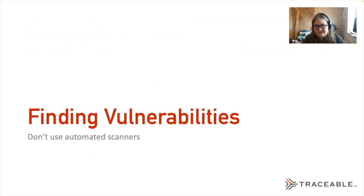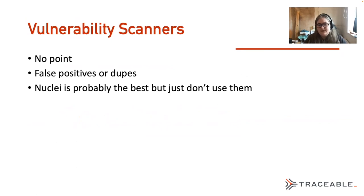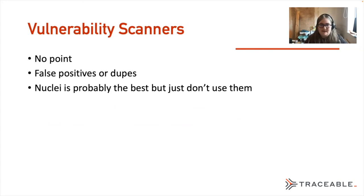What about finding vulnerabilities? My number one piece of advice is don't use automated scanners if you're doing bug bounty or pen testing — there's just no point. You're going to get false positives, you're going to get duplicates. These tools are not designed with APIs in mind — they're designed for more traditional websites, they don't expect the same input or output. The best one is Nuclei if you want to use one, but for APIs I really don't recommend it. There are some API-specific vulnerability scanners which are better, but they tend to rely on having a Swagger file with all the API endpoints, which you usually don't have.